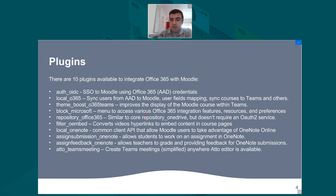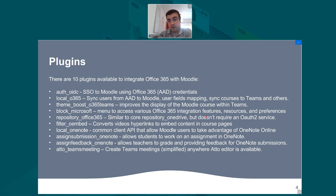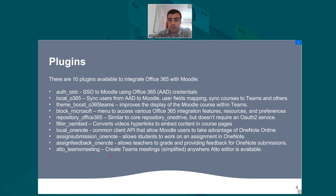Theme Boost Office 365 improves the display of how the Moodle course shows within the Teams tab. Then Block Microsoft provides menu items to access various features — like shortcuts for features, resources, and preferences. Repository filter, OneNote for submissions, and Auto Teams Meetings that create Teams meetings — like a simplified version of meetings — anywhere where the Auto Editor is available.